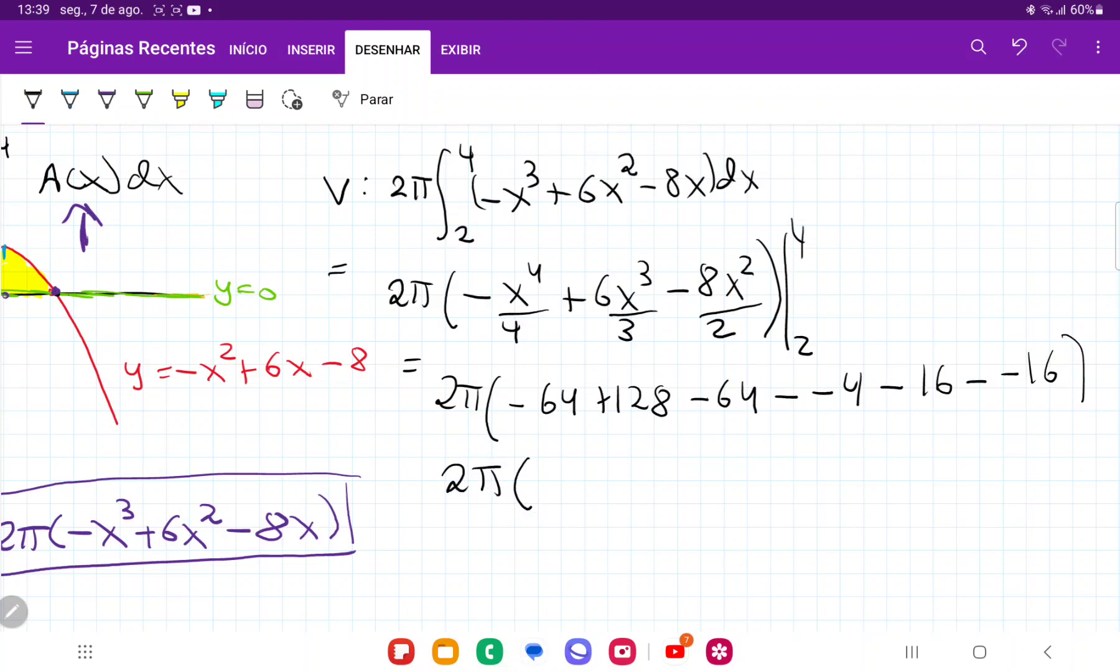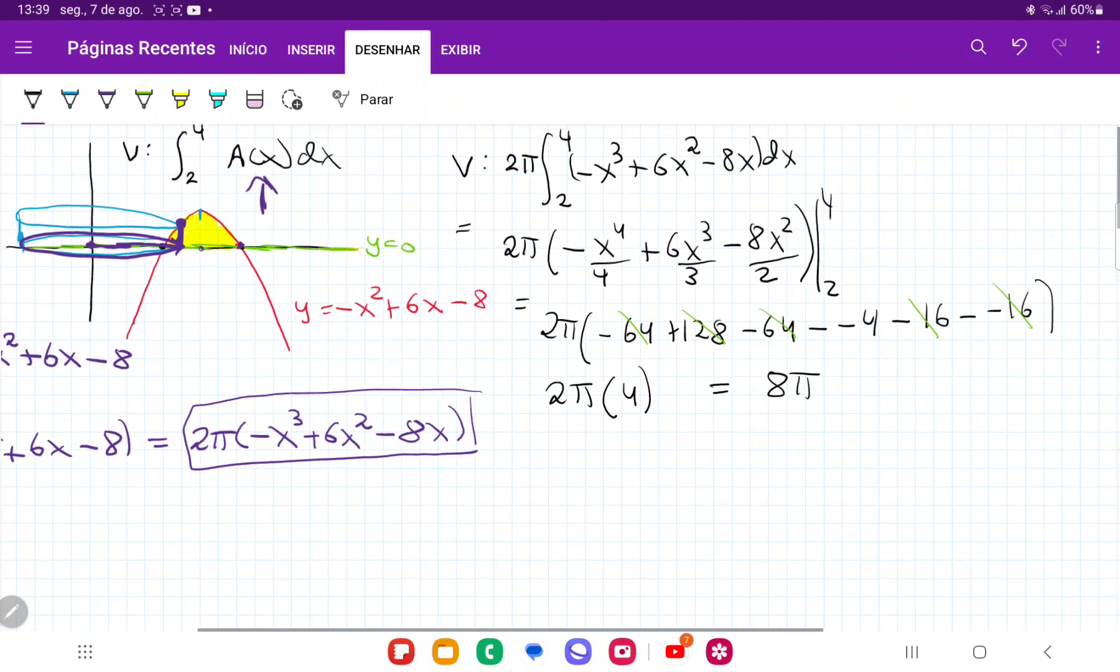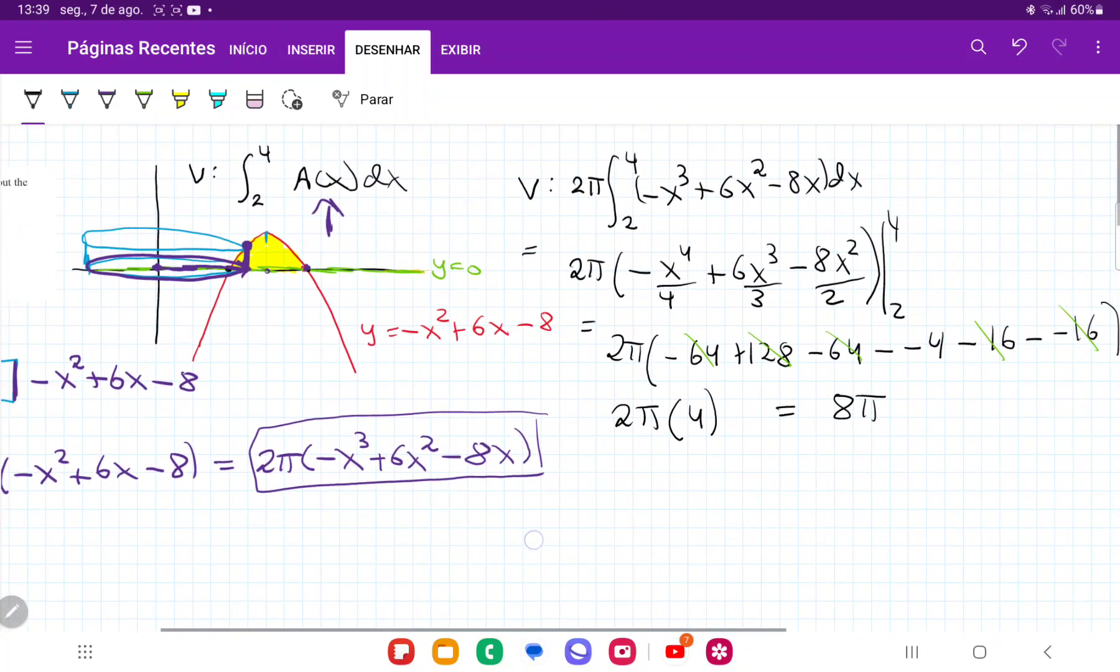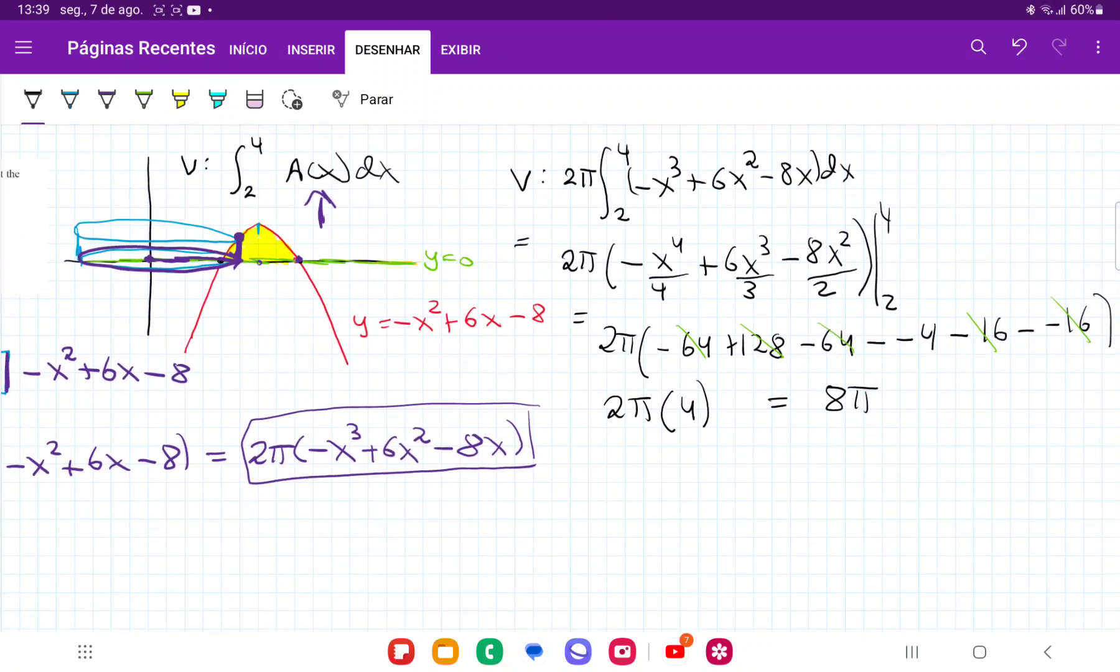And so if I simplify this, this is going to give me 2 pi times, let's see, minus 16 minus 16 plus 128. That cancels out. So this here goes to 0. Minus 16 minus minus 16. This goes to 0. And we're left with minus minus 4. So that's going to give us 4. And so the answer is going to be 2 pi times 4. It's going to be 8 pi. And that's what I get when I take this area and I revolve it around the y-axis.